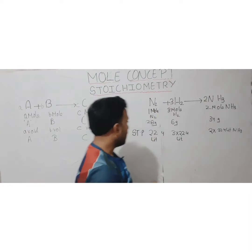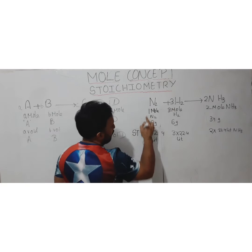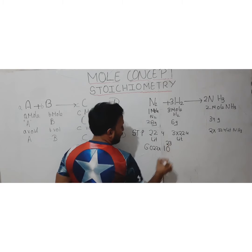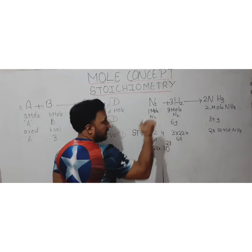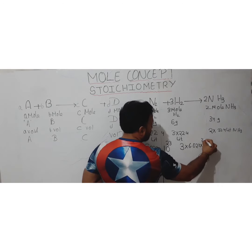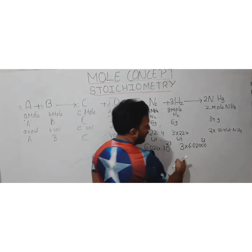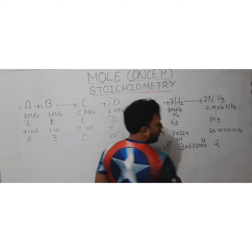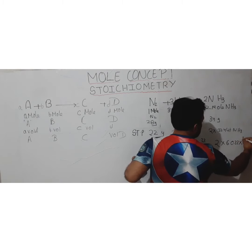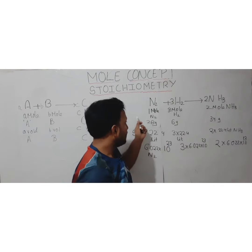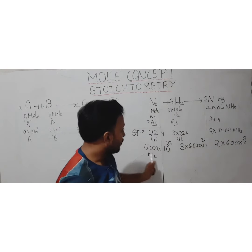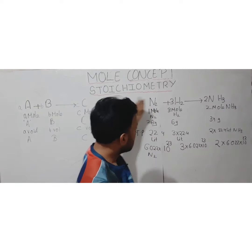For number of molecules: one mole of nitrogen means 6.022 × 10²³ molecules of nitrogen. Three moles of hydrogen means 3 × 6.022 × 10²³ molecules. Two moles of ammonia means 2 × 6.022 × 10²³ molecules. Summarizing the stoichiometry: 1 mol, 3 mol, 2 mol; 28 g, 6 g, 34 g; 22.4 L, 3×22.4 L, 2×22.4 L; and the molecule counts as shown.